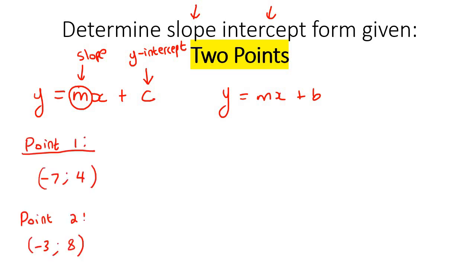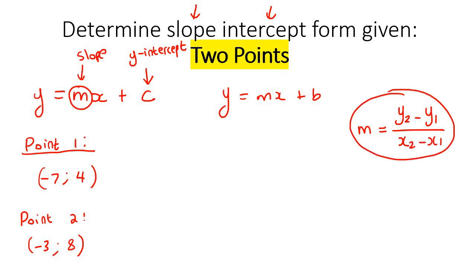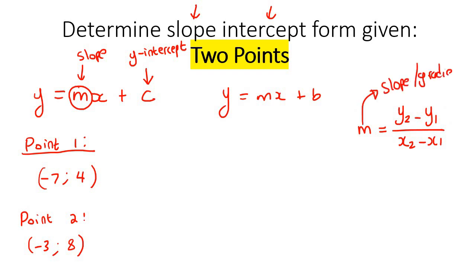So let's say they give us two points — point one is this one over here, and point two is this one over here. What we need to be able to do is find the slope. To find the slope, we use this formula over here: m equals y2 minus y1 over x2 minus x1. This is a formula that allows you to calculate the slope, which is m. You might also call it the gradient. It's quite an easy formula to use, but you just have to be very careful.